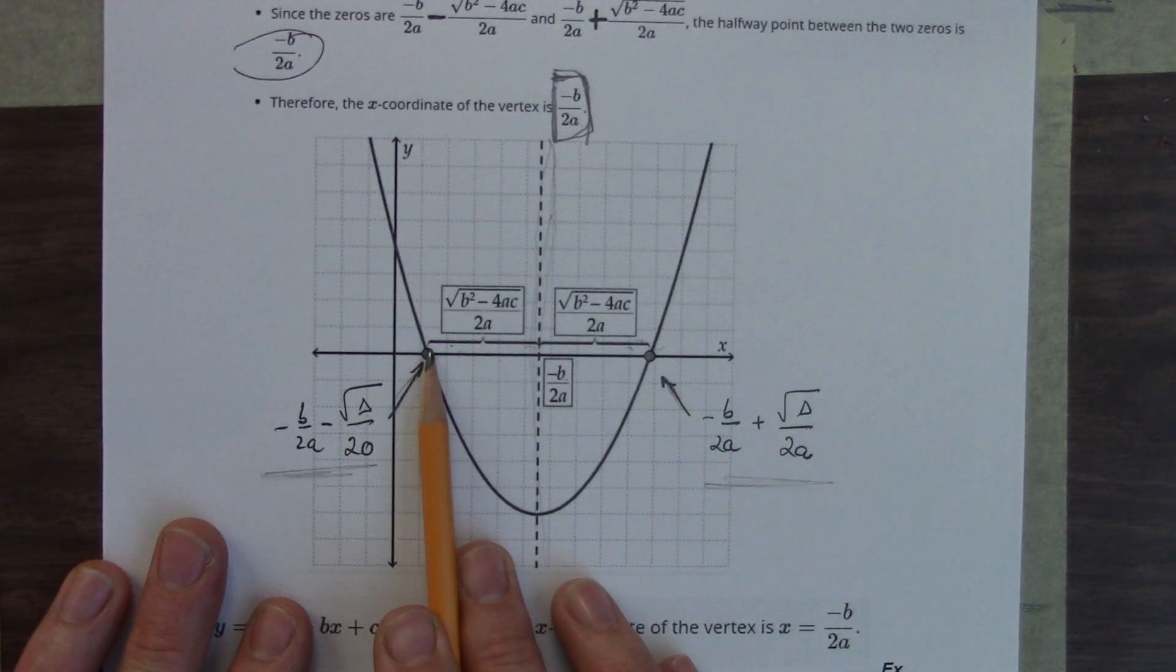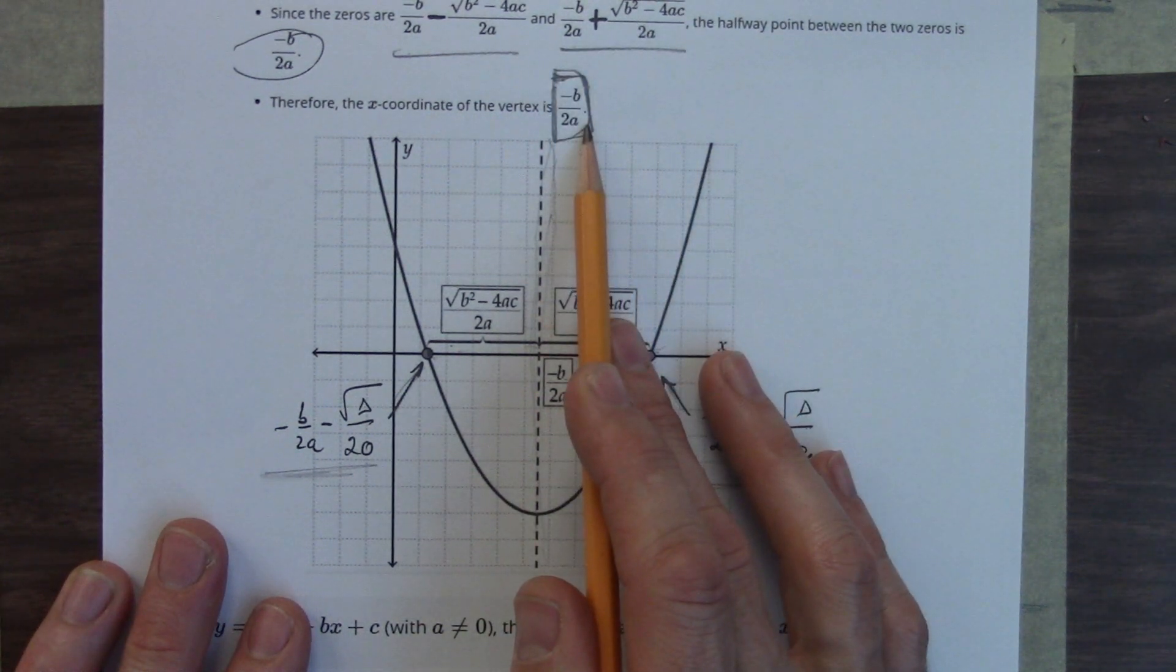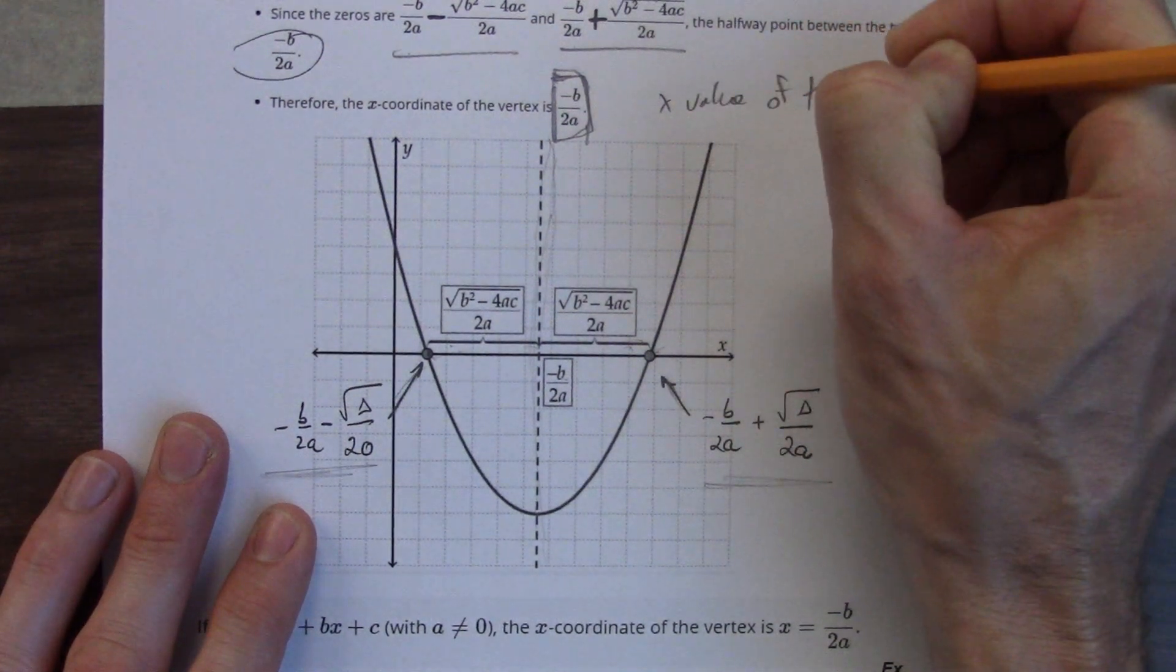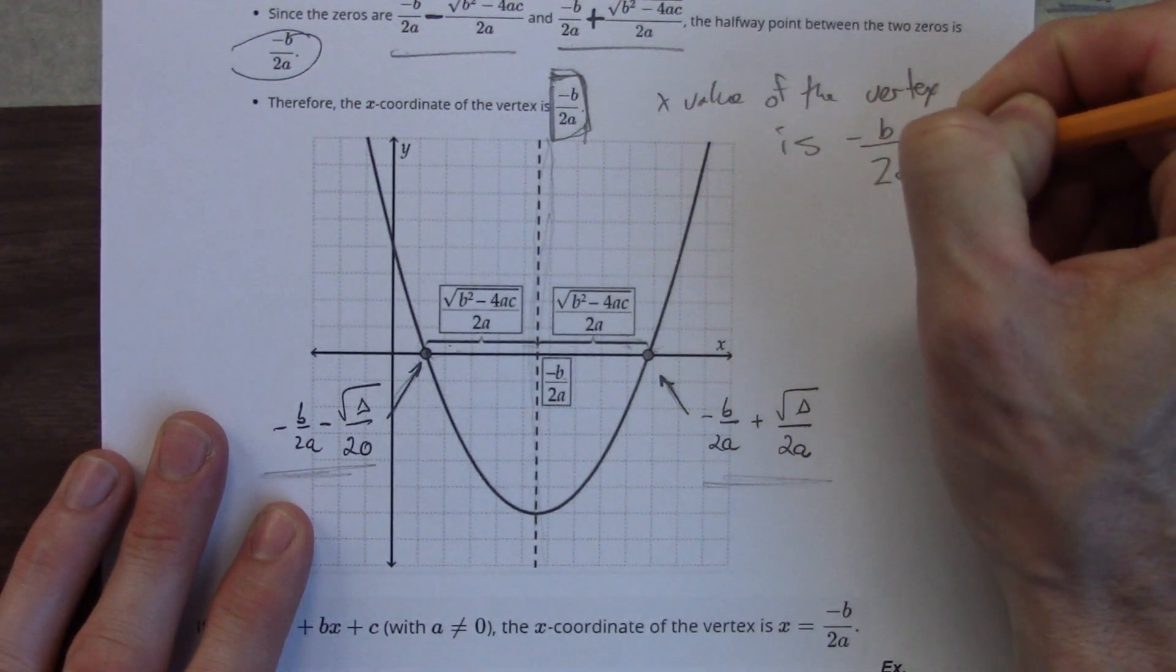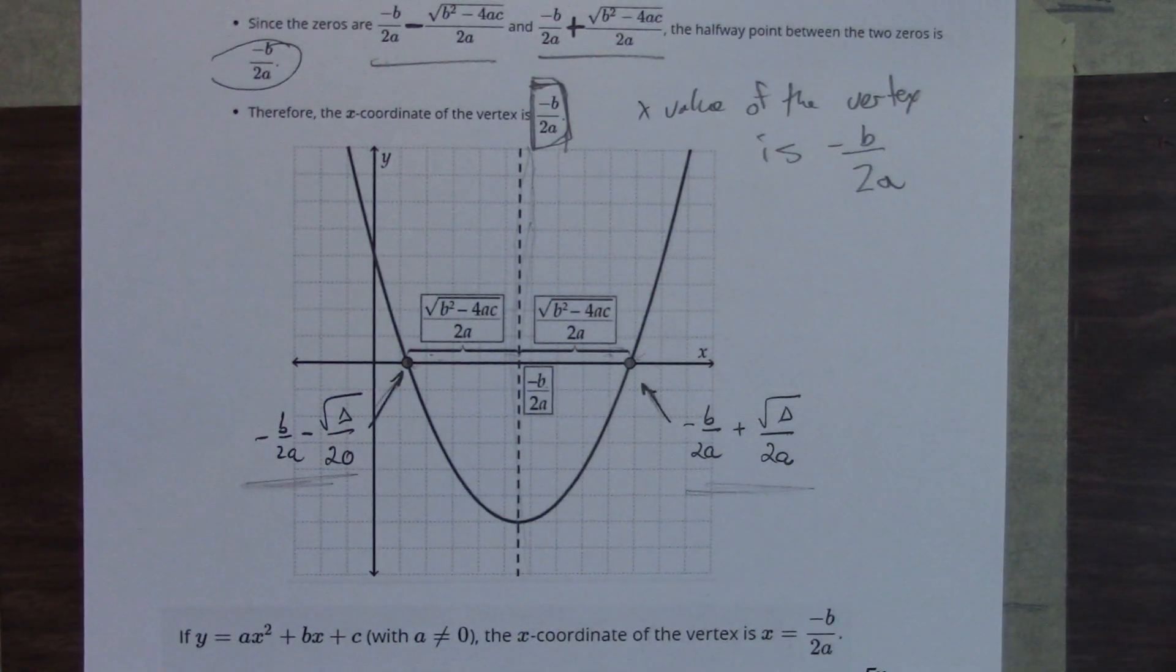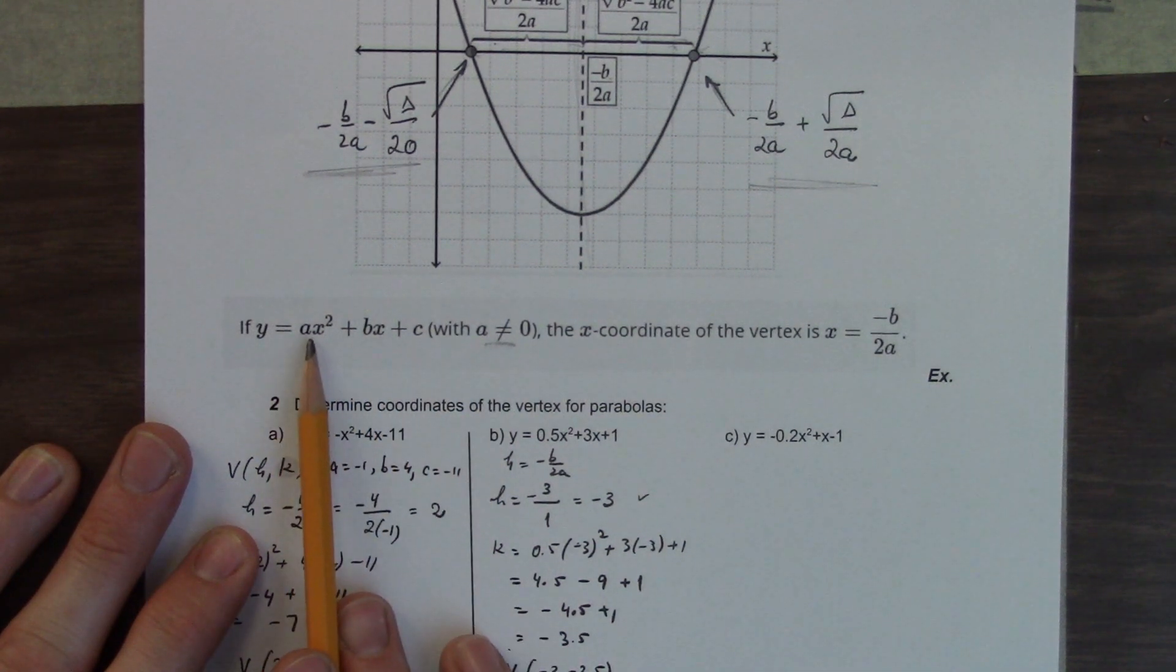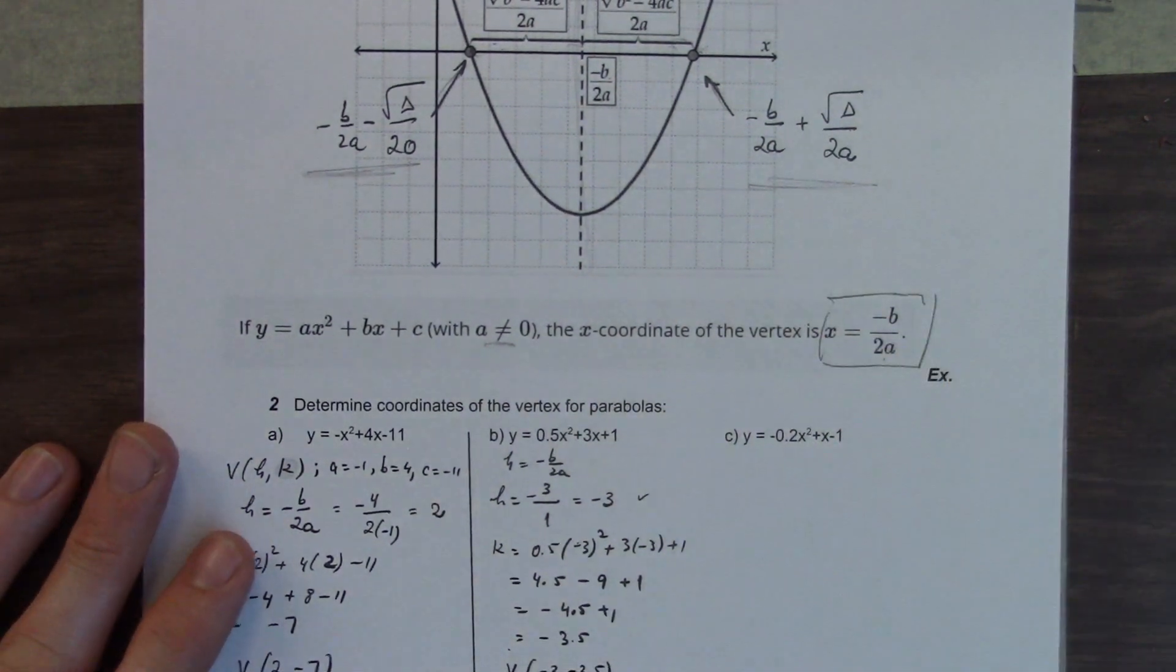Remember, midpoint, we take one x plus the other x and divide by 2. That's what we've done here. One x plus the other x divide by 2. We simplify that to be negative b over 2a. So the x value of the vertex is negative b over 2a. That's the takeaway.